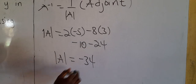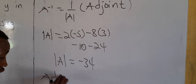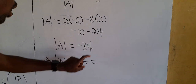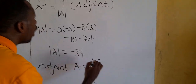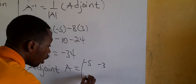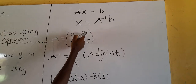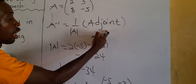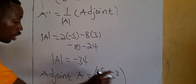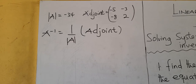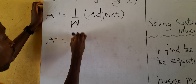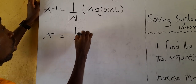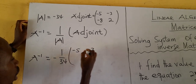Now what is the adjoint? For a 2×2 matrix, we swap the diagonal elements and negate the off-diagonal ones. So the adjoint is [−5, −3; −8, 2]. Therefore, the inverse of A is (1/−34) times [−5, −3; −8, 2].